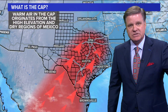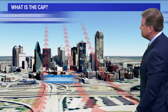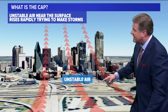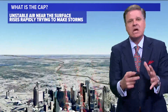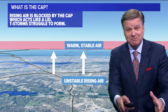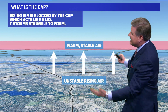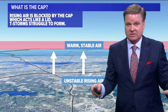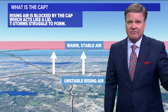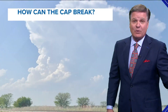So that warm air in the cap originates from the higher elevation dry regions of Mexico, and it's in place across north Texas — really across the entire state of Texas, but right now across the northern sections. What happens is we have this warm, unstable air starting to rise near the surface. It rises rapidly to make thunderstorms. But we have that warm, stable air blown in from the high plateaus of Mexico — the cap is in place. That unstable air rises and hits the bottom of the cap. That rising air is blocked by the cap, and it acts like a lid, allowing thunderstorms to not turn severe.